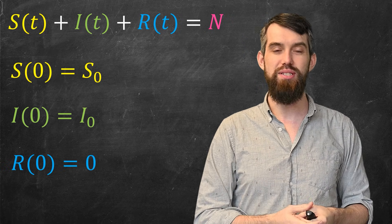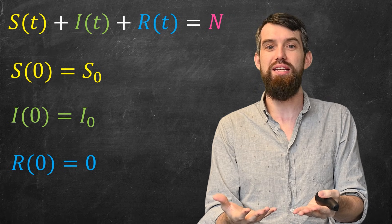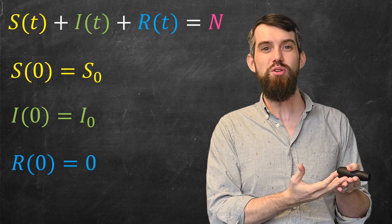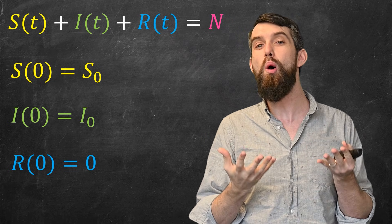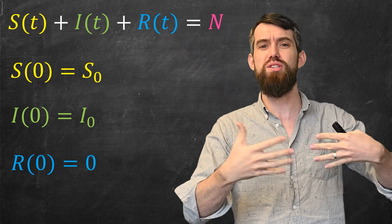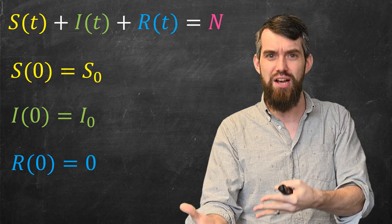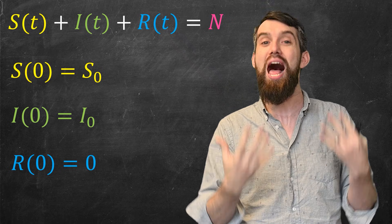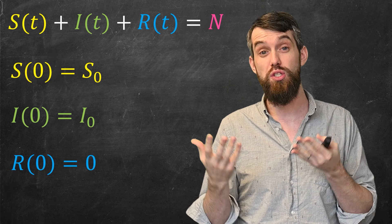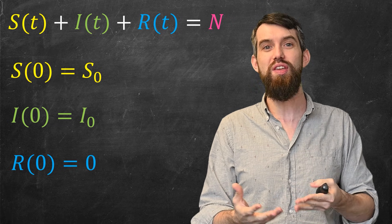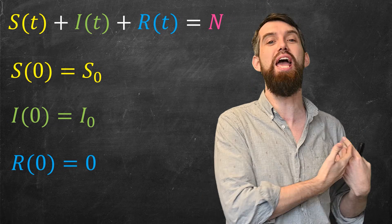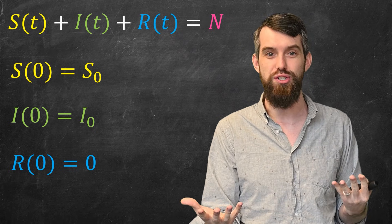At the beginning there are no recovered people, because we're at the very start. There's going to be a very small number of infected people — probably just one right at the beginning, although we might not start tracking data for a little while, so I₀, the initial number of infected people, might be some relatively small number. And S₀, the number of susceptible people at time zero, is everybody else — a very large number.